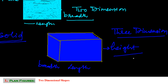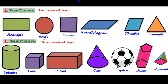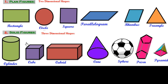Now I will show you some two-dimensional and three-dimensional figures. In the plane figures — the two-dimensional figures — you see there is a rectangle with length and breadth, and a circle. If you cut shapes from a plane you can get various shapes: square, parallelogram, rhombus, triangle, and many others.